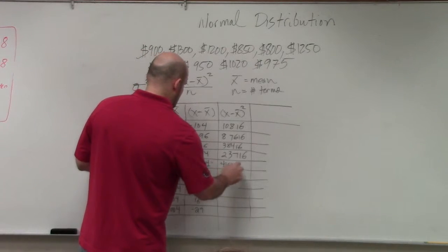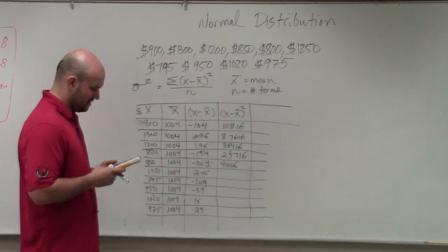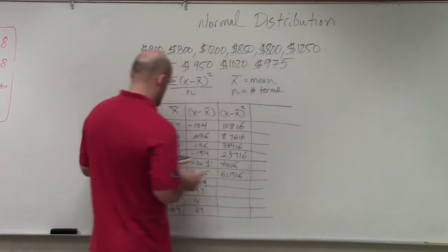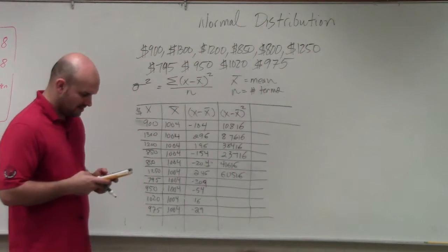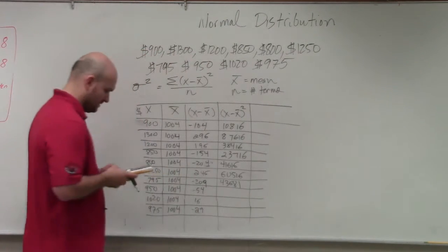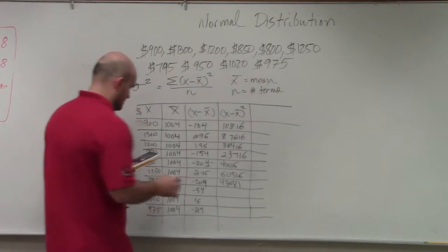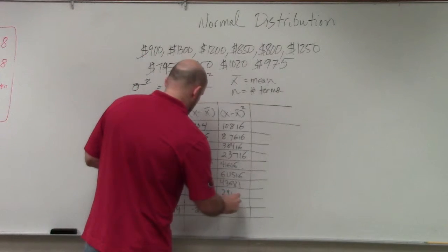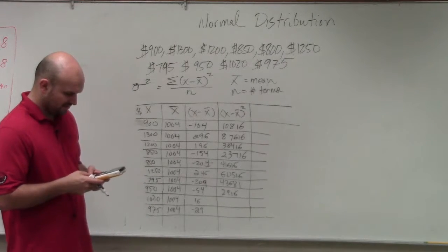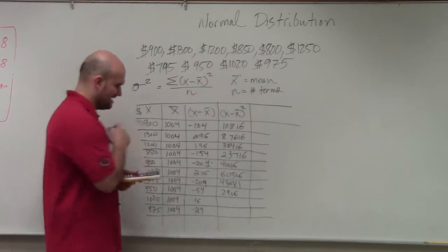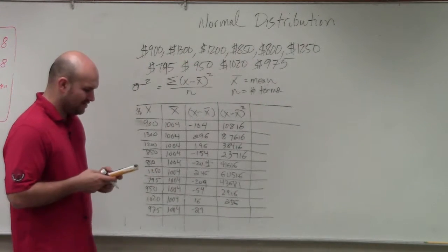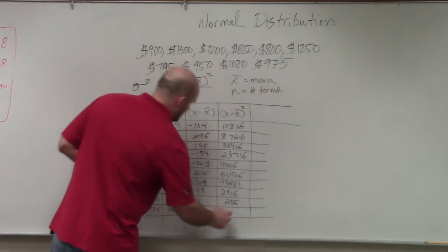616. 246 squared, 60,516. 209 squared, 43,681. 54 squared, 2,916. 16 squared, 256. And 29 squared, 841.